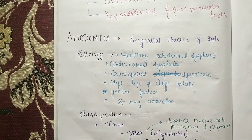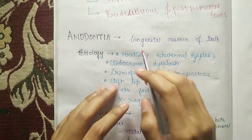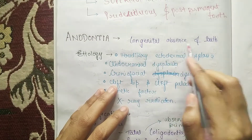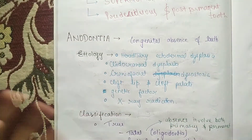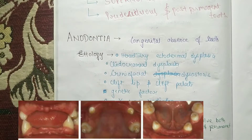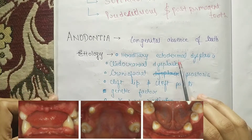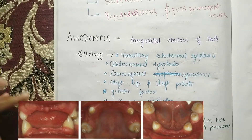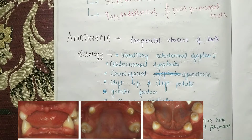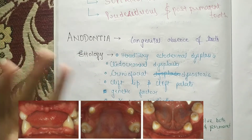Anodontia means congenital absence of tooth. Coming to its etiology — it is hereditary ectodermal dysplasia. It is hereditary and can be because of many diseases.